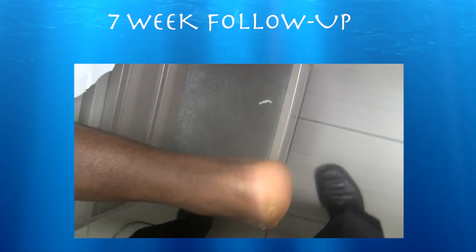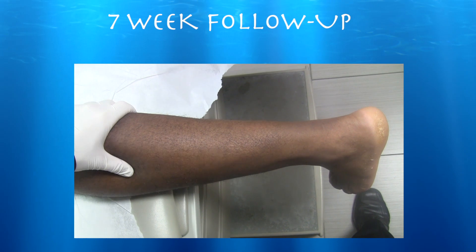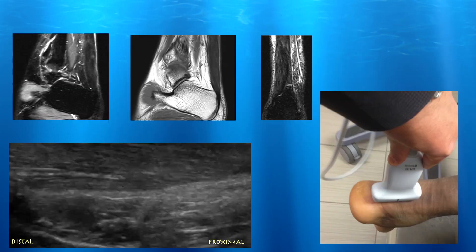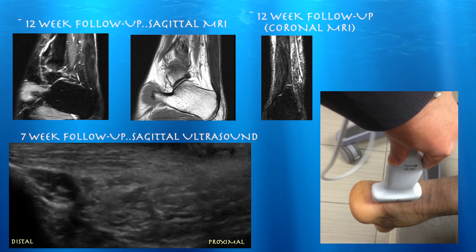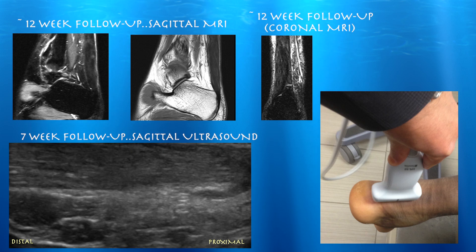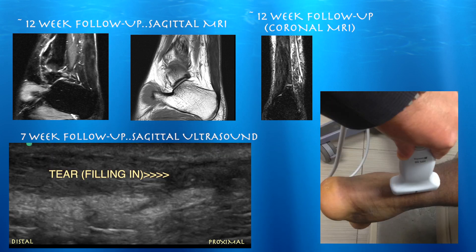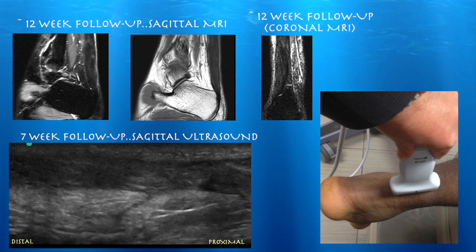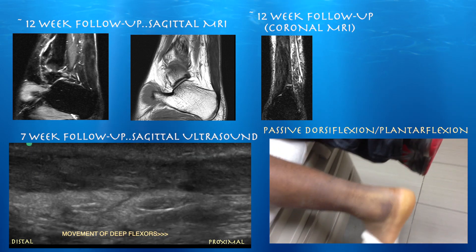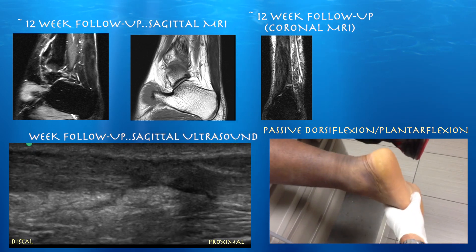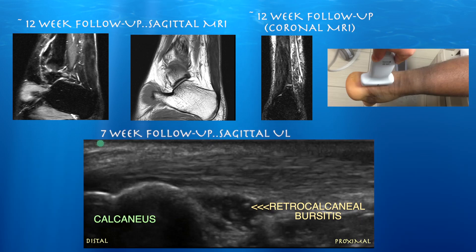Let's do our Thompson test here — and it's connected. Here are some follow-up MRIs where you can see the thickening and irregularity of the Achilles tendon consistent with healing. Here's our follow-up ultrasound, which is consistent with the MRI findings. With some motion you can actually see movement of the deep flexors of the foot. Still some scarring is keeping that Achilles tendon somewhat tacked down, and it still shows some retrocalcaneal bursitis seven weeks out from the injury.